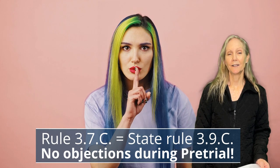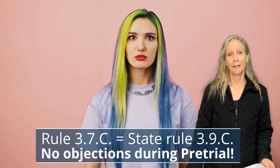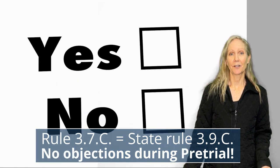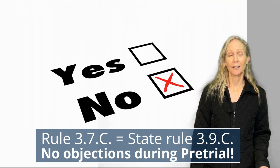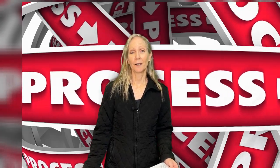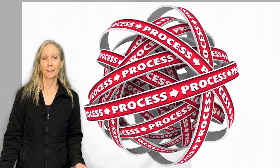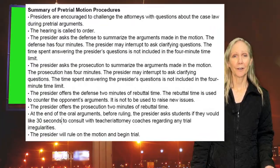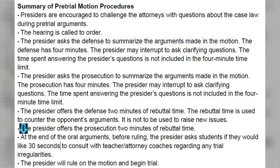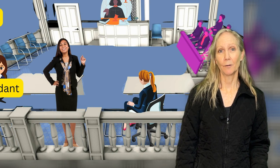3.7c: there are no objections during pretrial argument. That's a really good one to know — if something strange happens and the other pretrial attorney makes an objection, there are no objections during pretrial argument. The proper place to address a rule violation would be in the 30 seconds following the entire pretrial argument portion, when the judge is supposed to stop and give you time to confer with your attorney coaches about whether there was a violation of rules.